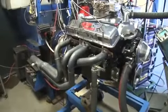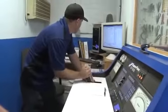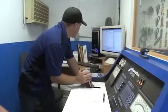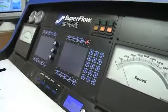The HHO generator output was fed into the air intake on a Chevrolet small block V8 350 cubic inch engine. The engine and generator performance was tested and recorded on an SF902 dynamometer.